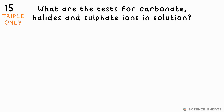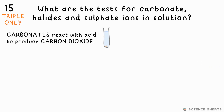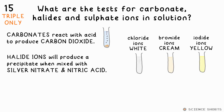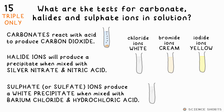How do you test for carbonates, halides, and sulfates in solution? Carbonates react with acid to produce carbon dioxide. To test for halide ions, add silver nitrate to nitric acid — they'll form coloured precipitates: chloride white, bromide cream, iodide yellow. Sulfate ions will cause a white precipitate to form when mixed with barium chloride and hydrochloric acid.